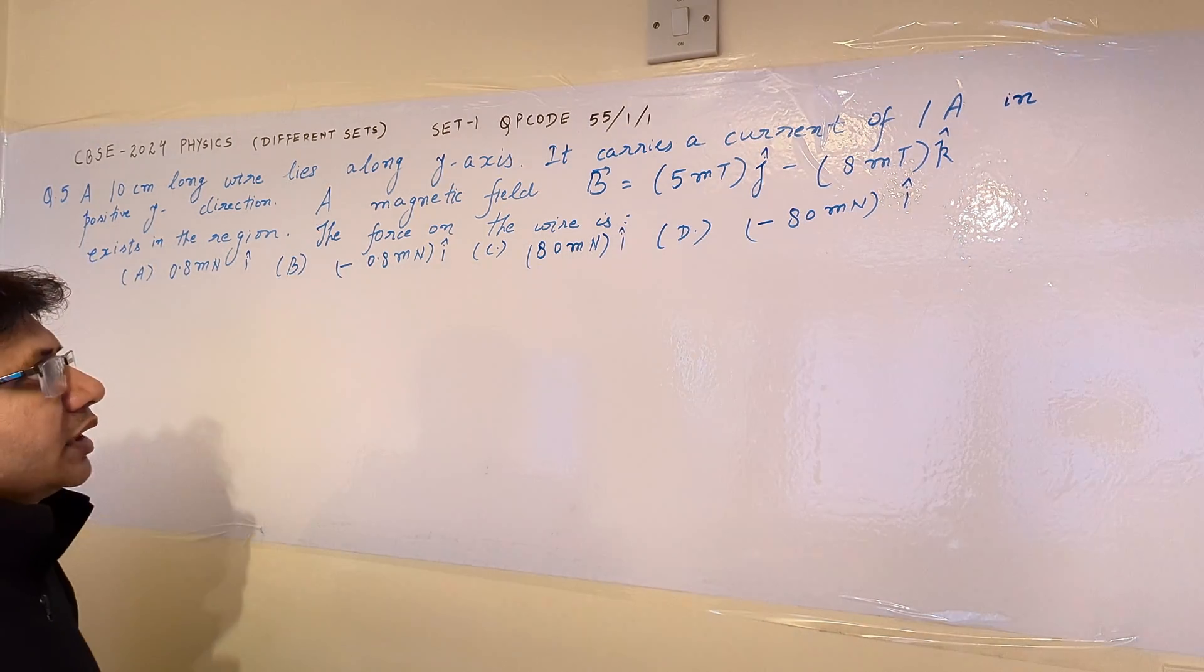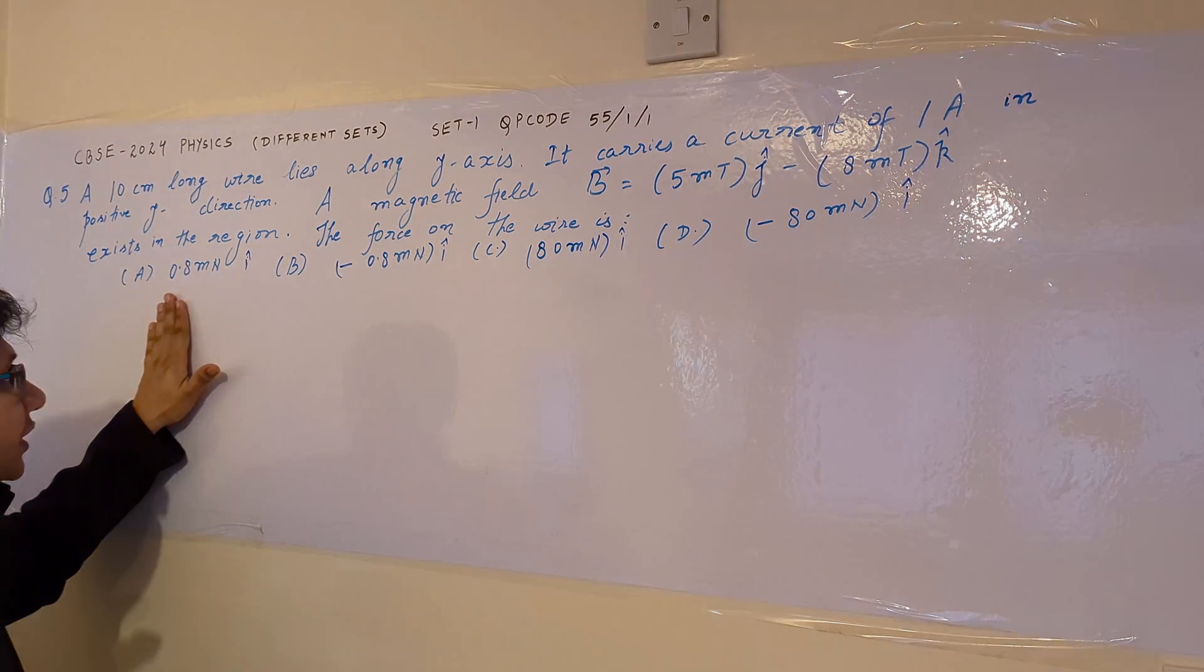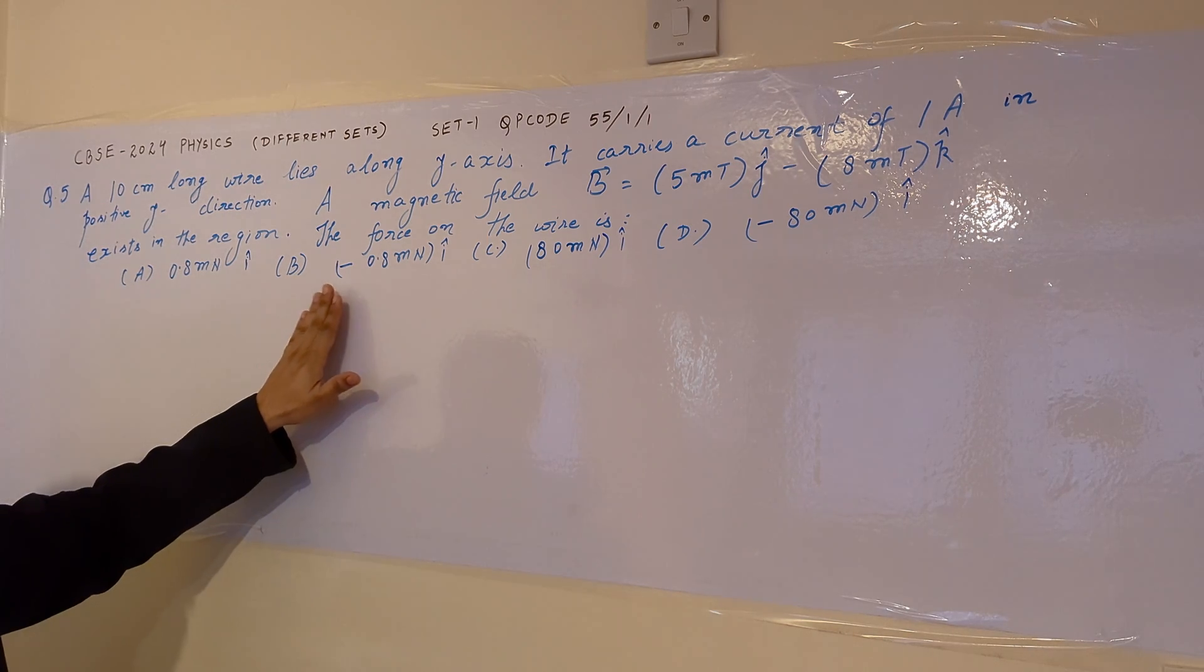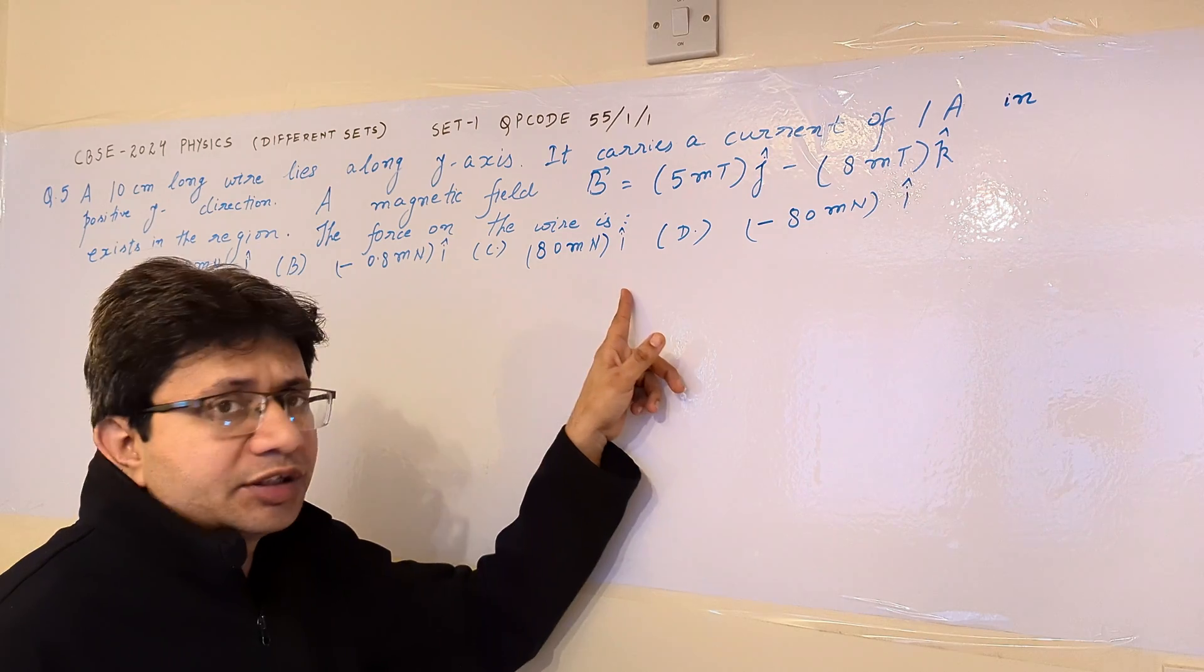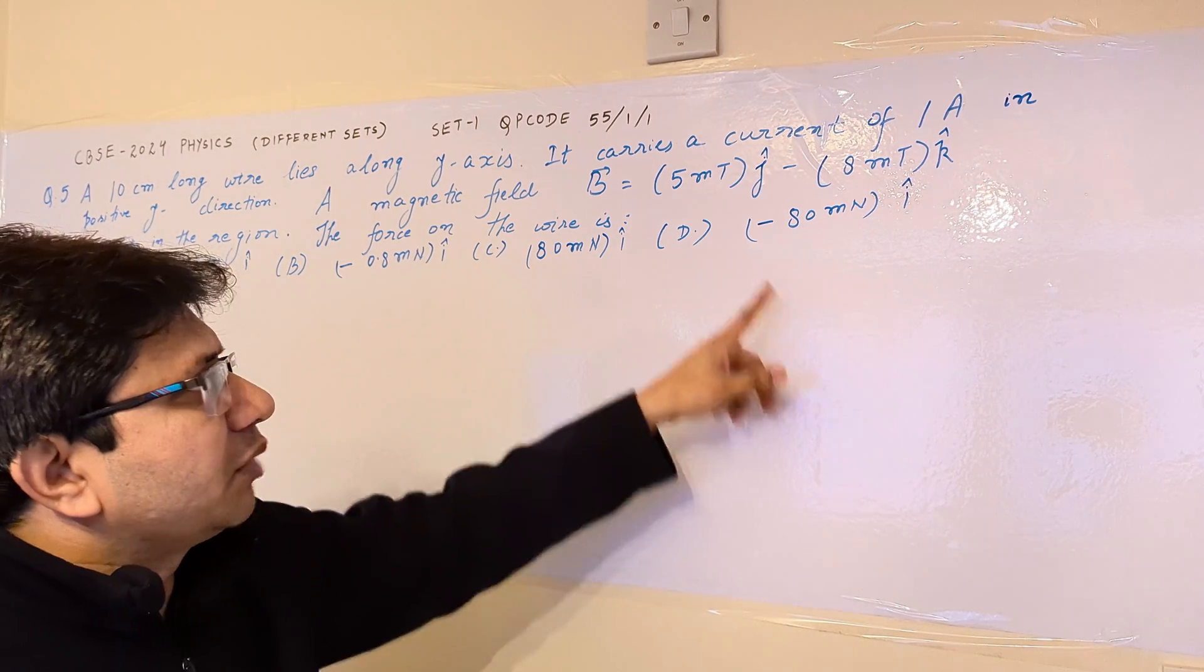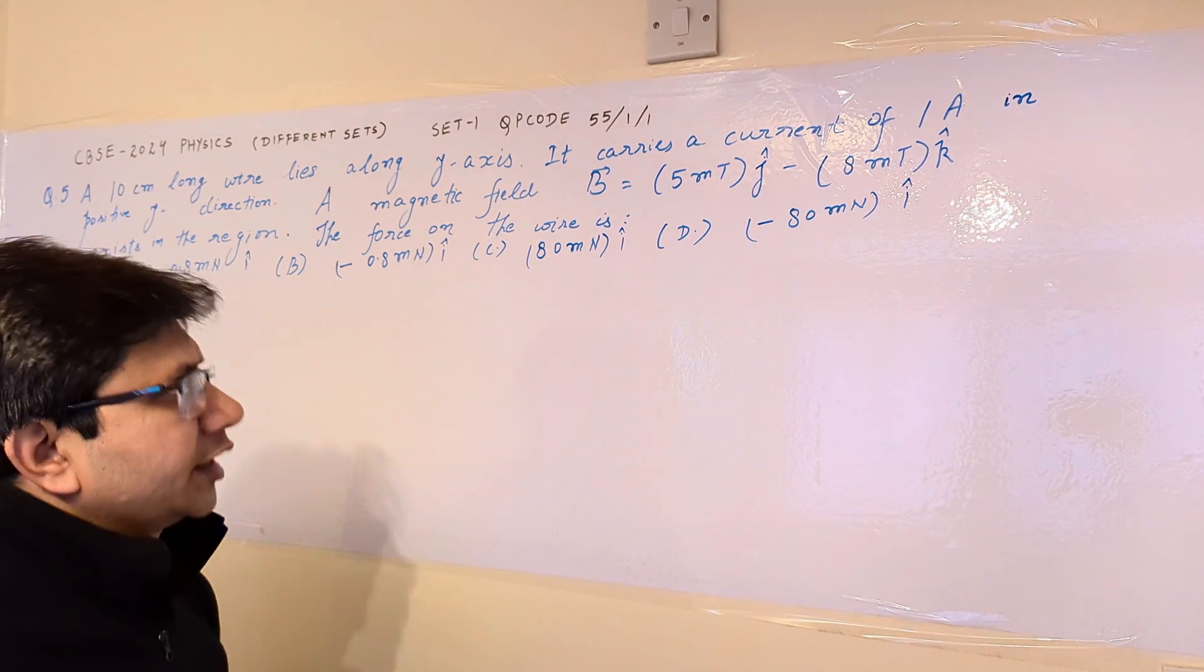The force on the wire is option A 0.8 millinewton I cap, option B minus 0.8 millinewton I cap, option C 80 millinewton I cap, and option D minus 80 millinewton I cap.